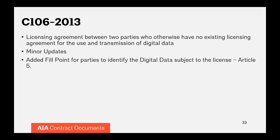The C-106 is the last of our digital practice documents to address. It is a whole separate agreement, largely unrelated to the E-203, G-201, and G-202. Its purpose is a simple licensing agreement intended for transferring a license for digital data between two parties that don't otherwise have a contractual relationship. In the standard AIA owner-architect agreement, a license is already granted between the architect and owner, so there's no need for a separate licensing agreement in that case. But if an architect or contractor were going to transfer a model or digital data to someone who isn't otherwise in the contractual chain, they can use the C-106.